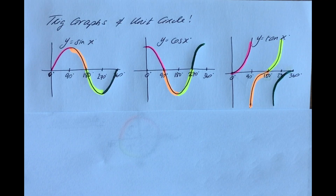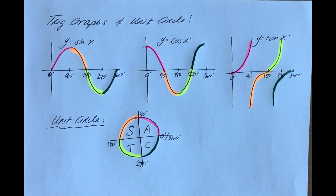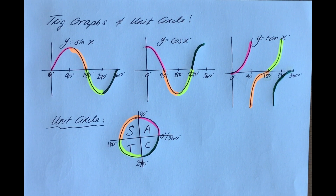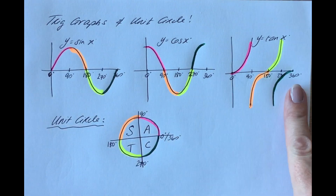We don't want to draw out the graphs each time we're solving trig equations — whether it's the sine, cos, or tan graph — because that would be quite laboursome. Instead, we're going to use a little process relating to the unit circle, which will help us understand what's going on in each of the graphs, so we don't have to draw them out every time. We'll be able to figure out where all the extra solutions are without drawing out the graphs.